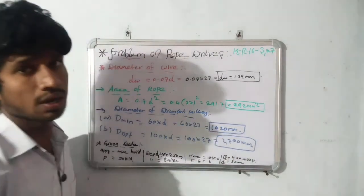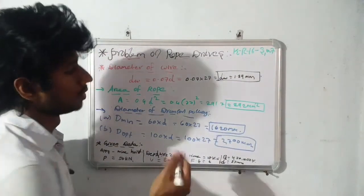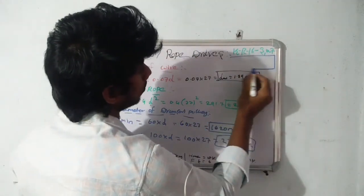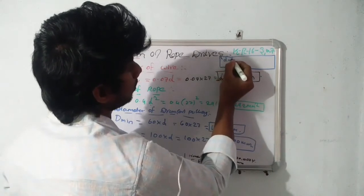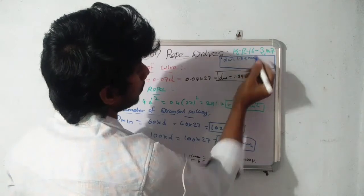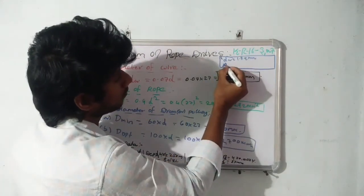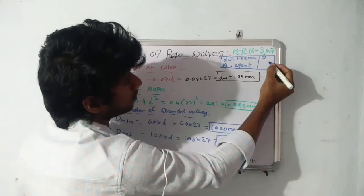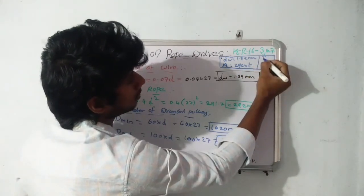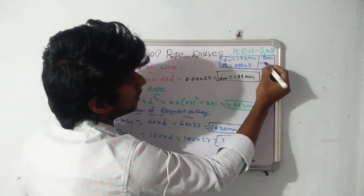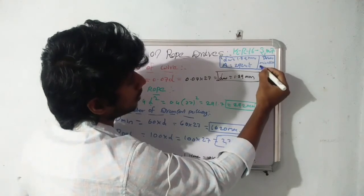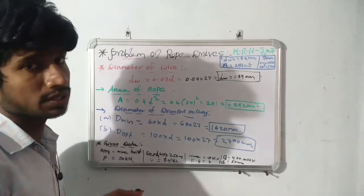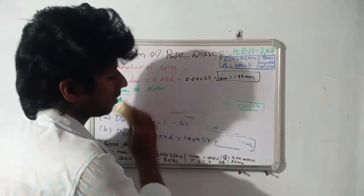To summarize the parameters of the 6×19 rope: diameter of wire dw = 1.89 mm, area of rope A = 292 mm², diameter of drum or pulley in minimum condition = 1620 mm, and in optimum condition = 2700 mm. Next, we are going to see the remaining requirement parameters.